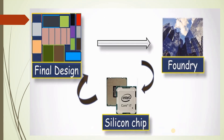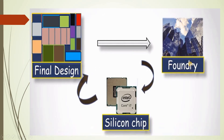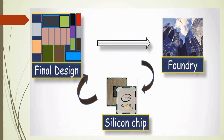This is the final stage of the VLSI design flow. The GDS file is sent to the Foundry, where the specified design is fabricated on silicon. Finally, the chip is packaged using either plastic or ceramic, in various package types like dual inline package or ball grid array, and we get the final silicon chip. This completes the VLSI design flow. Thank you.